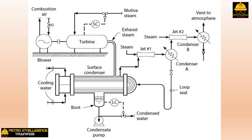The purpose of the loop seal: the pressure in condenser A is greater than in the surface condenser but less than in the final condenser B, meaning condenser A operates at vacuum conditions. This prevents condensed steam in condenser A from draining to atmospheric pressure unless the condenser is elevated by 10 to 15 feet. To avoid this, condensate is drained back to the lower-pressure surface condenser. A loop seal prevents non-condensable vapors from blowing back. The height of this loop seal must exceed the pressure difference in feet of water between the surface condenser and condenser A.